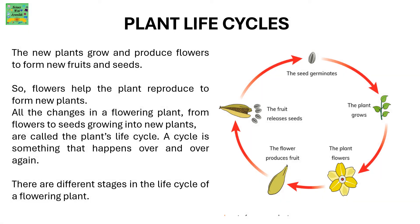The new plants grow and produce flowers to form new fruits and seeds. So flowers help the plant reproduce to form new plants. All the changes in the flowering plant — from flowers to seeds growing into new plants — are called the plant's life cycle. A cycle is something that happens over and over again. There are different stages in the life cycle of a flowering plant.